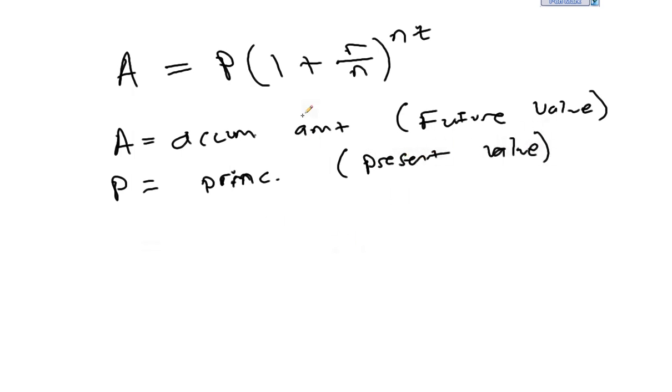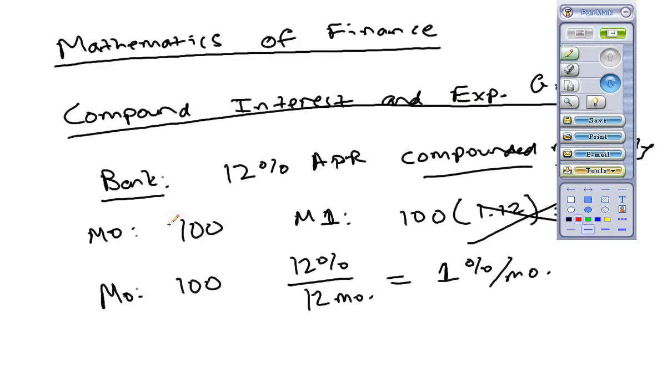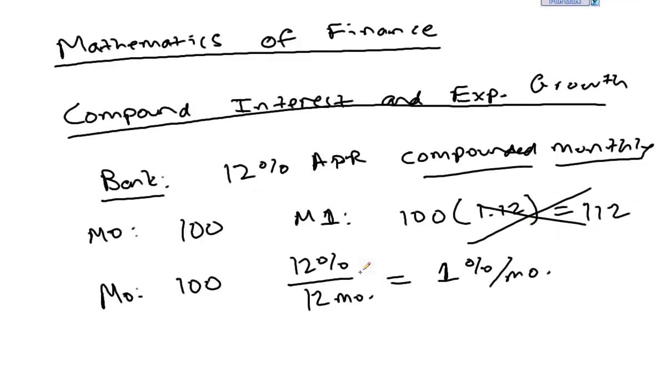So then why do we take—we see that we have one plus in the parentheses. We saw that here, 1.12. What we really should have in that parentheses is 1.01 if we're only looking at the future value in one month.